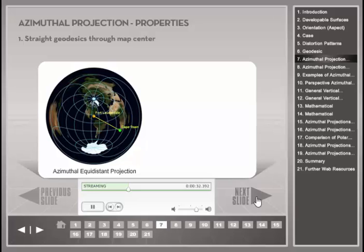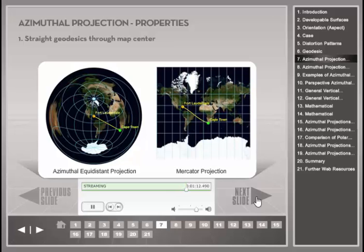Using Fort Lauderdale as the map center, this concept is illustrated in the left figure, which uses an azimuthal equidistant projection. Meridians and parallels spaced 30 degrees apart are overlaid in blue. To find the shortest flight route from Fort Lauderdale to Cape Town, South Africa, this can be easily achieved by drawing a straight line between these two locations, as shown with the yellow line. As an example where the great circle arc is not mapped as a straight line, the Mercator projection shown to the right plots the great circle path as a curved line, making finding the shortest connection more difficult.